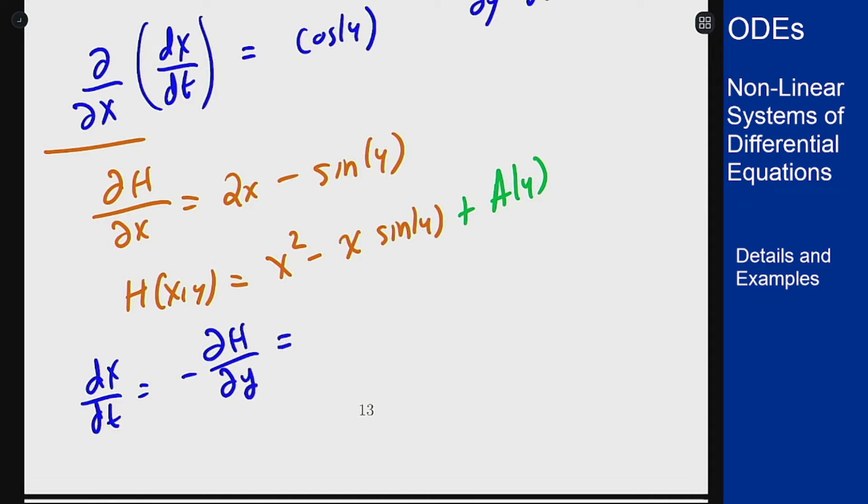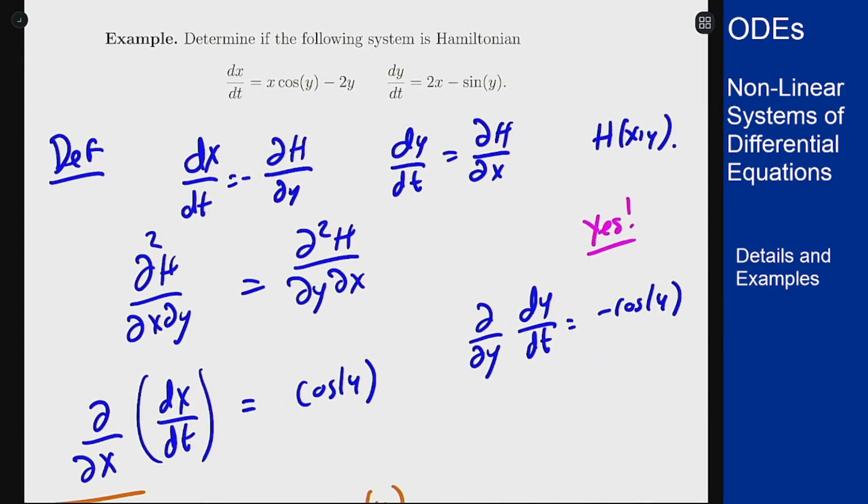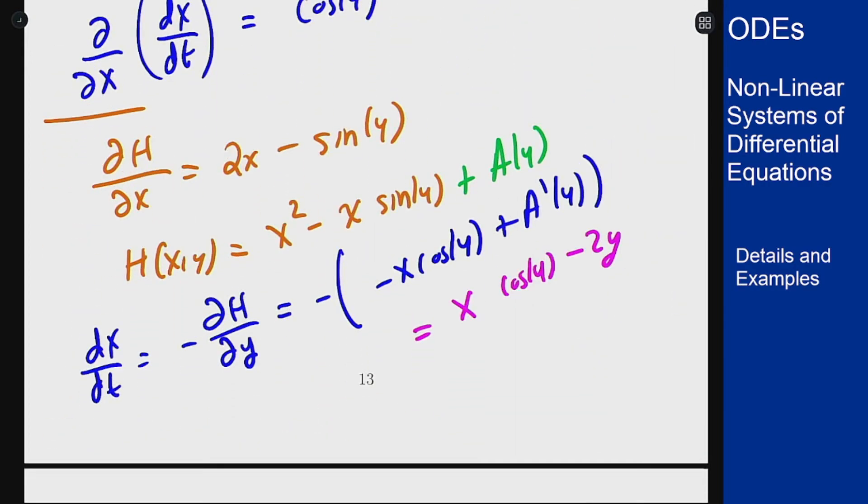Negative partial h partial y, which is derivative of sine is cosine, so negative x cosine of y plus a prime of y. And I want this to match dx/dt, which from above was x cosine of y minus 2y. So we see that these two terms here match up because it's actually minus sign out front here, and I'm left with the fact that a prime of y equals 2y.